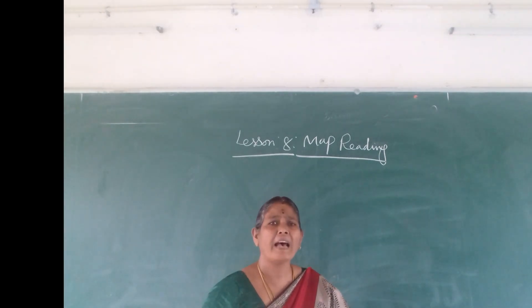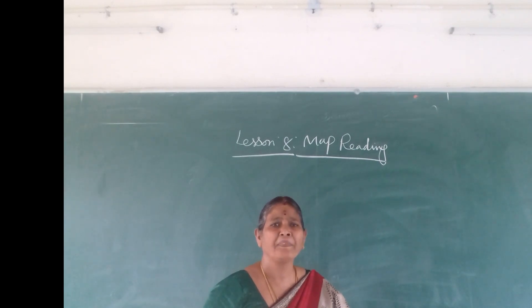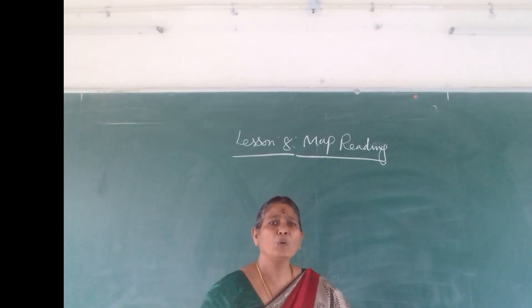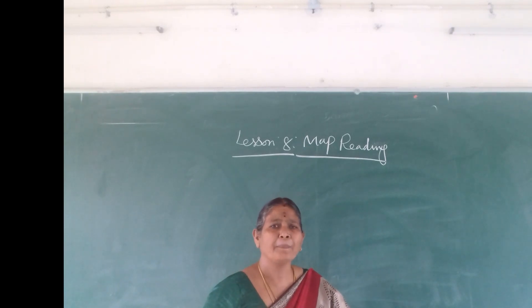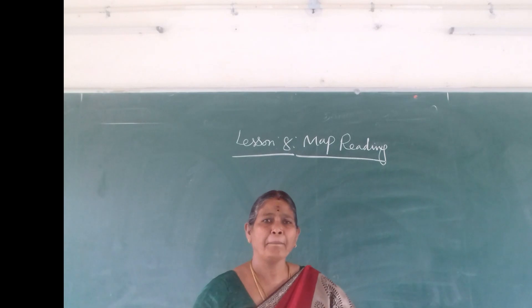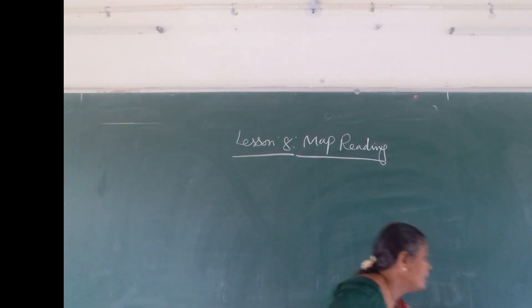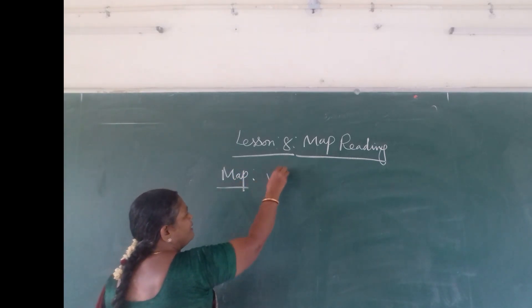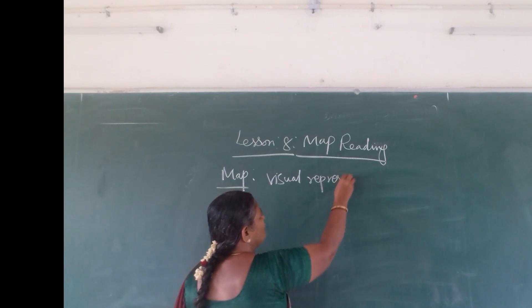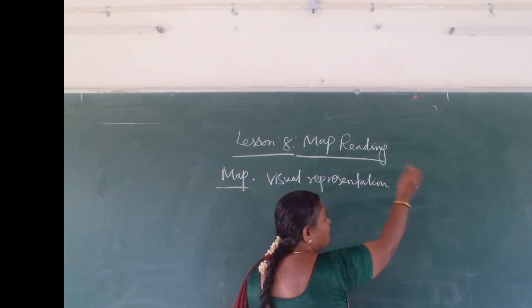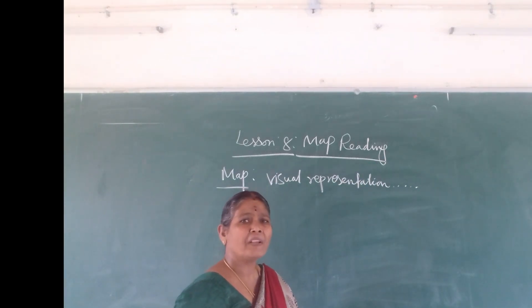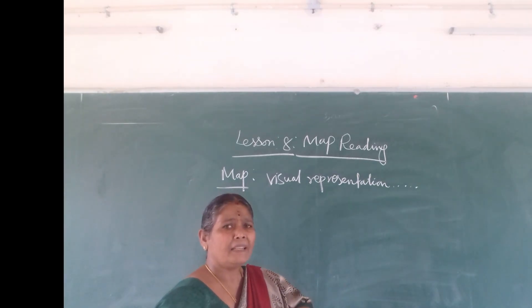They make maps as precisely as possible, and they design the map to read and understand the information presented about the actual world. Now children, what is a map? How do we define it? A map is a visual representation of actual ground information — a visual representation of a place or location in a particular area or entire area. It may be useful to explain all around the major features.